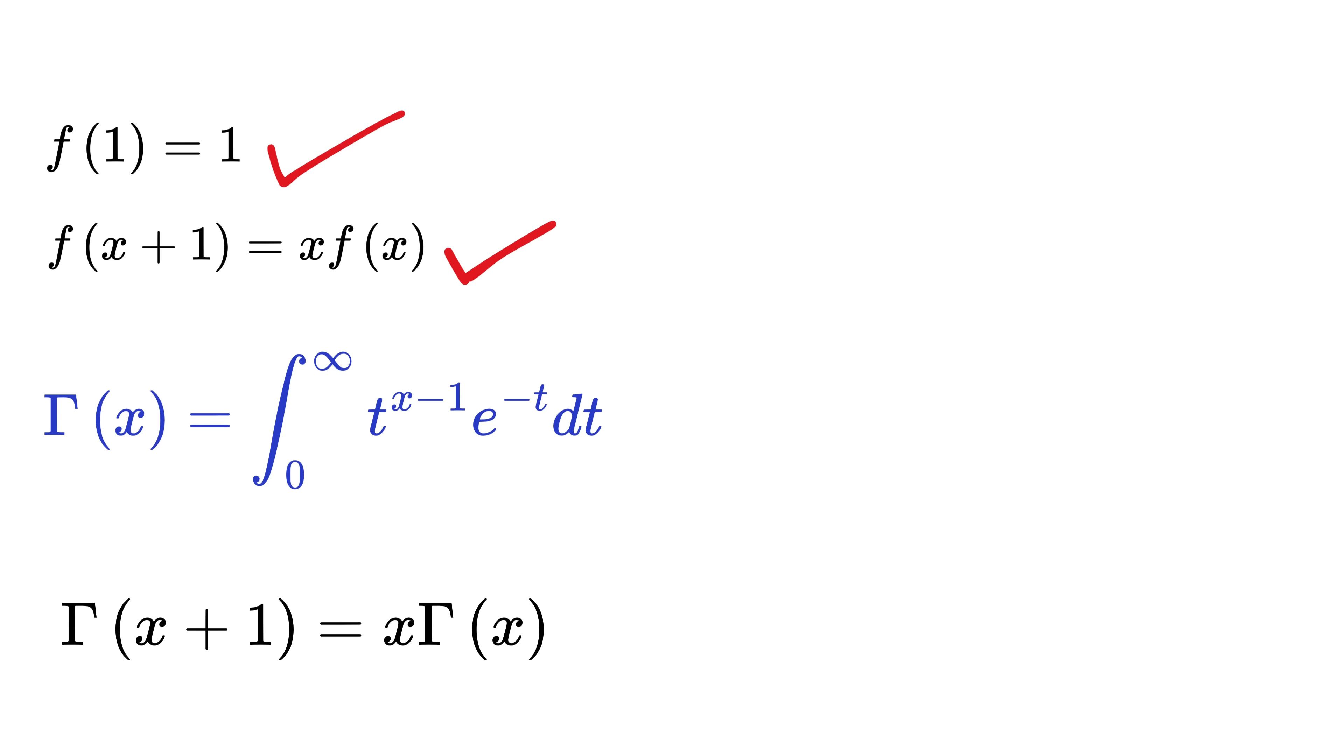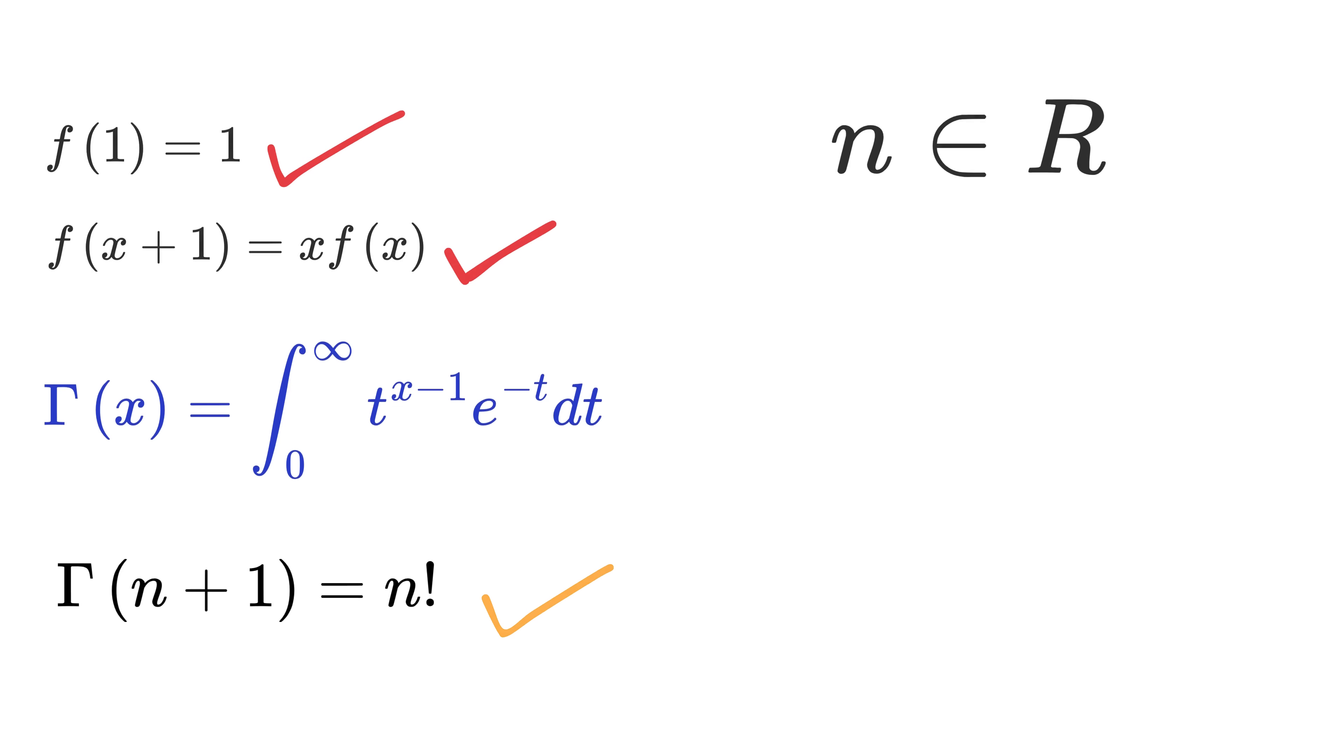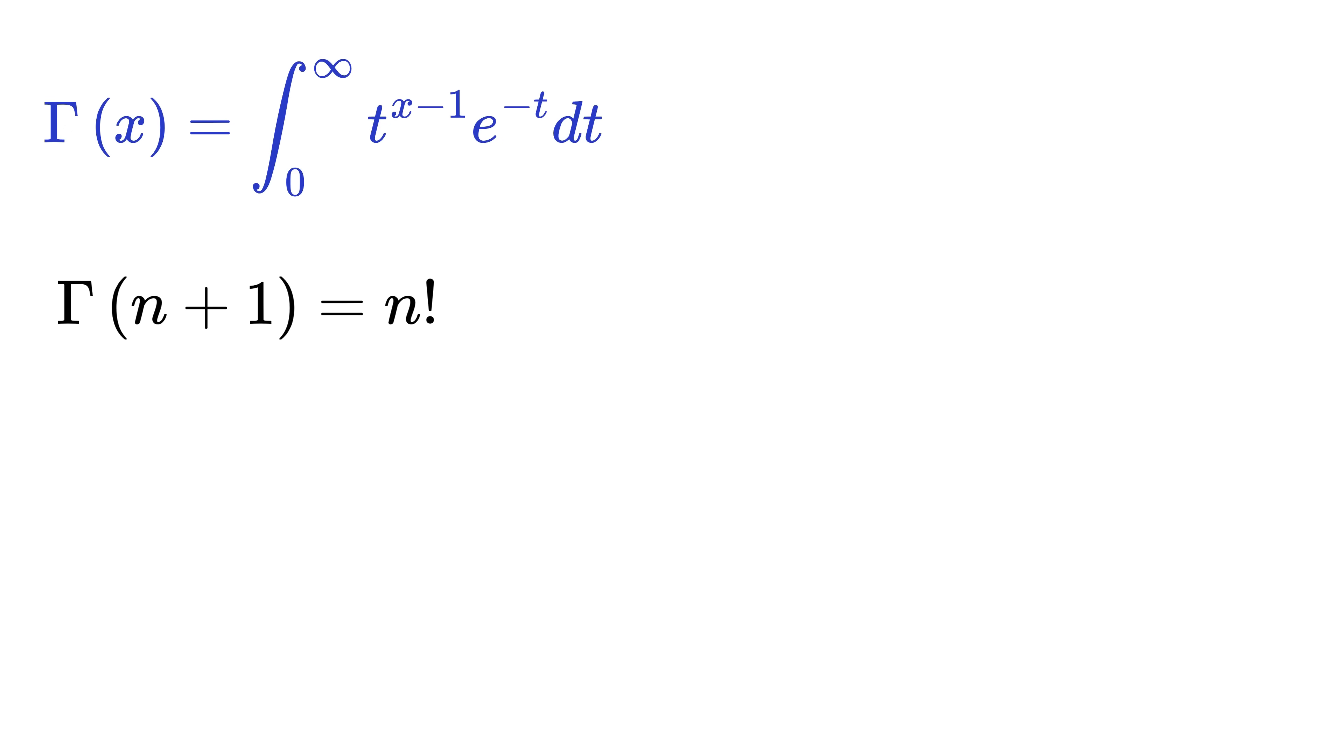For whole numbers, gamma of n plus 1 equals n factorial. But now it also works for fractions and many negative values as well. So if you want to find factorial of half, then simply put n equals half, and now you actually need to find the gamma function of half plus 1, or 3 divided by 2.